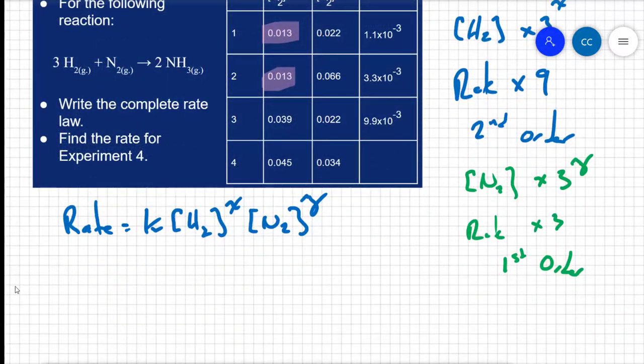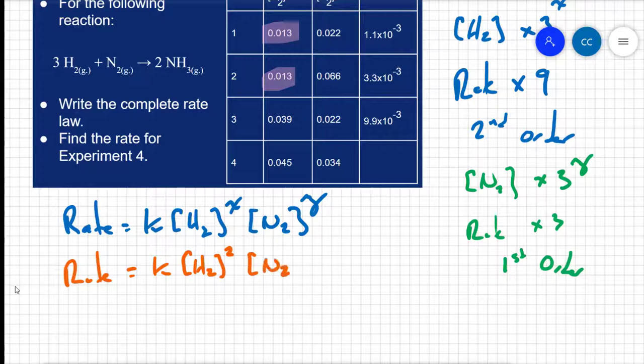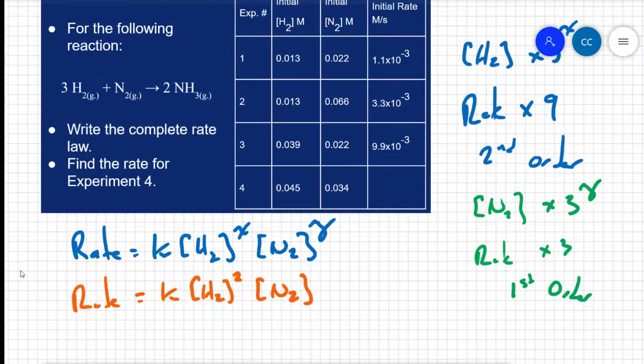So I can rewrite my rate law with this new information. I can say that the rate equals my rate constant times concentration of hydrogen to the second power times the concentration of nitrogen to the first power. Or I can just leave that be. Now it's time to find the rate constant, K.